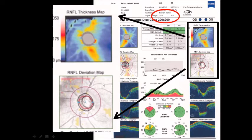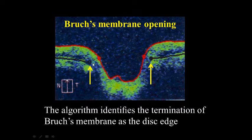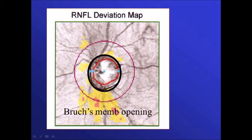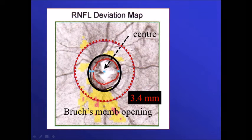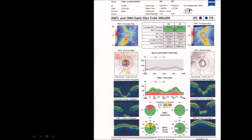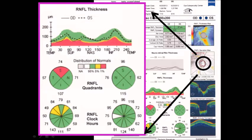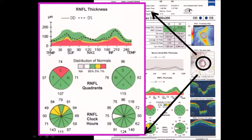The signal strength is good here. This area shows the thickness of the retinal fiber layer, and this is the deviation map — if the numbers are similar to the database it will be shown in gray, but if it differs it will be yellow or red. Yellow means it is found in only 5% of the population, and red means it is found in only 1% of the population. The machine determines the end of Bruch's membrane, then locates the center of the disc and draws a circle of 3.4 millimeters to calculate the thickness of the retinal fiber layer along that circle.